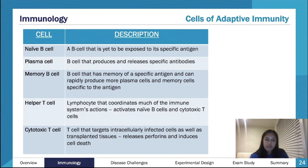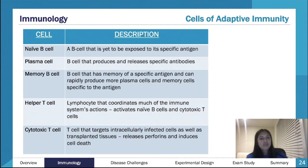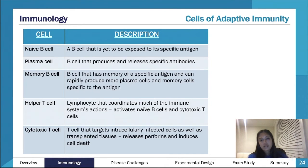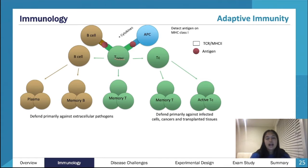Cytotoxic T cells are a little similar to your natural killer cells - they also use perforins and granzymes to induce apoptosis in infected cells. But instead of detecting when the MHC1 windows are down, this is part of the specific immune system, so they detect when a specific antigen is being presented on the MHC1. They're looking in the window and not just saying 'there's an invader' - they're saying 'this is the invader's first name, last name, date of birth.' They're being really specific.